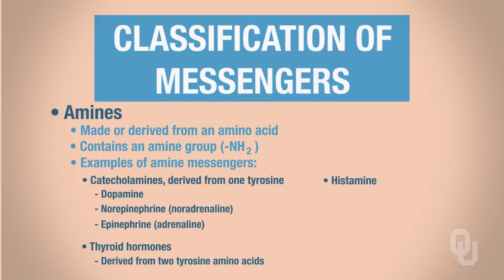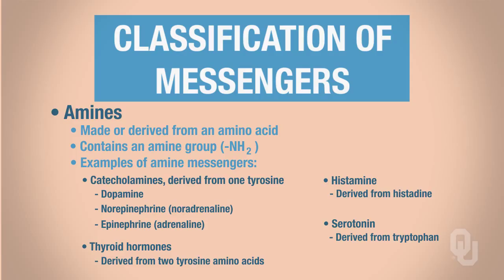Histamine, which you saw as an example of a paracrine chemical messenger, is a type of amine messenger derived from histidine. And then there's serotonin, which is made from the amino acid tryptophan. You need to start organizing this material so that when we move into thyroid hormone, for example, you can recognize that it's an amine — a chemical class of a chemical messenger. We'll be using many of these amine messengers throughout this semester.